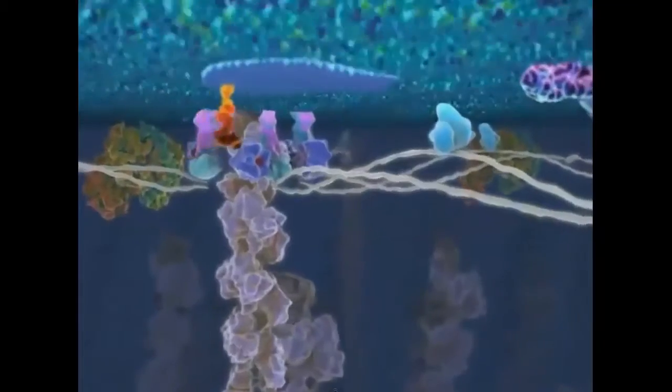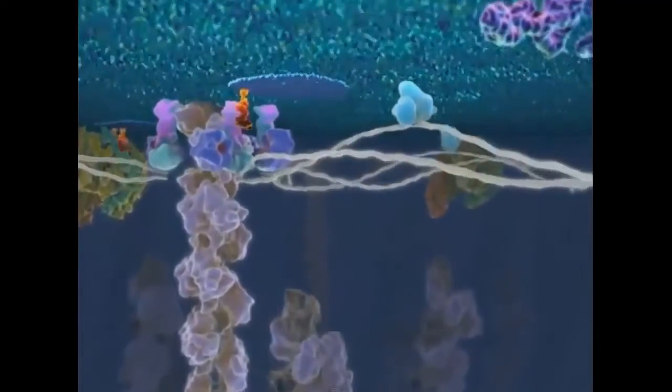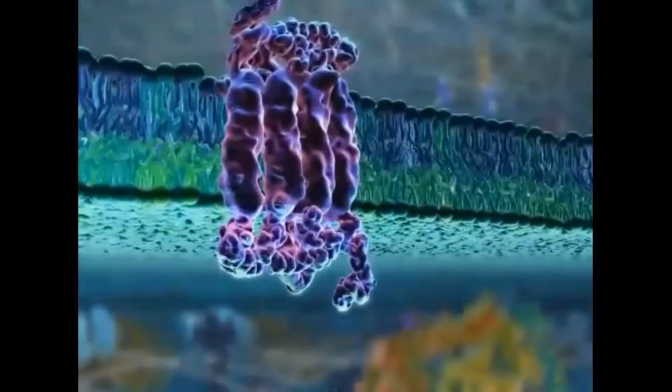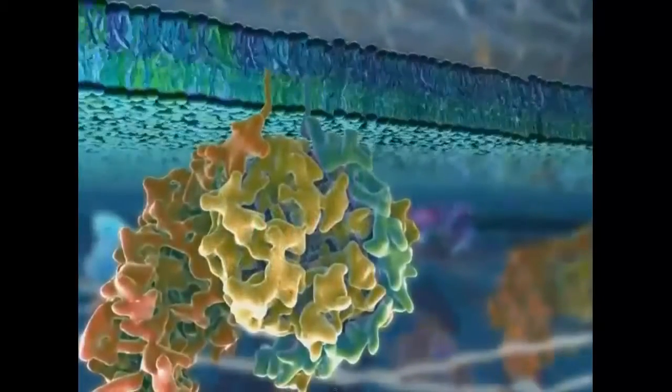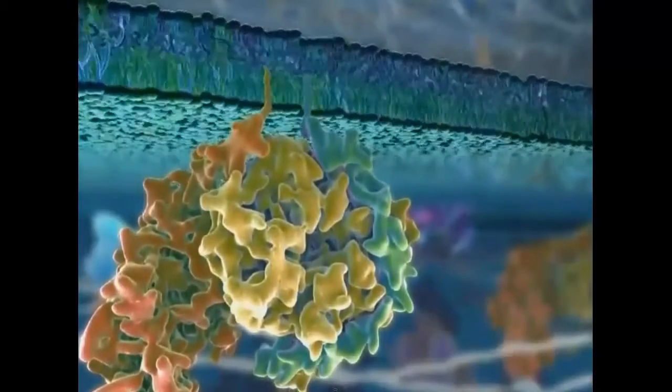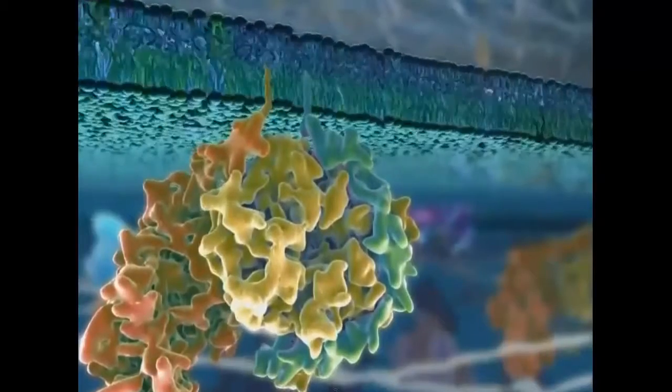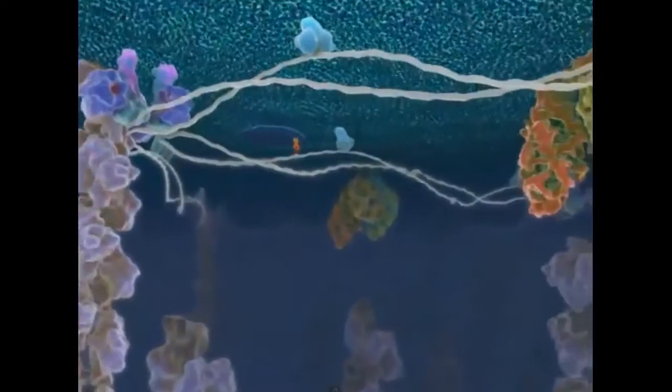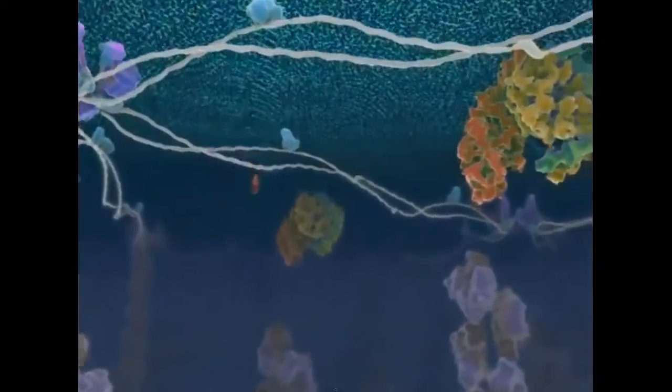The inner leaflet of the bilayer has a very different composition than that of the outer leaflet. While some proteins traverse the membrane, others are either anchored into the inner leaflet by covalently attached fatty acid chains or are recruited through non-covalent interactions with membrane proteins. The membrane bound protein complexes are critical for the transmission of signals across the plasma membrane.